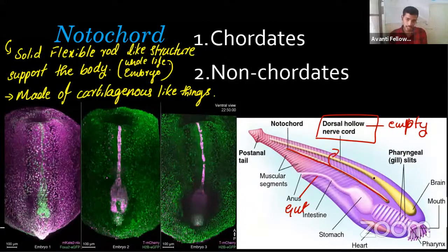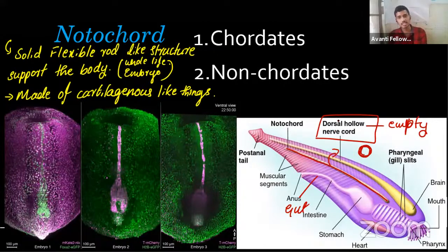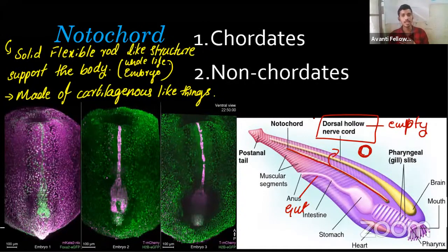The nerve cord is like a pipe — a narrow, hollow, fiber-like structure situated on the dorsal side above the notochord. That is why it is called the dorsal hollow nerve cord. The use of the notochord is to support the body. Dorsal means above, ventral means below — from back to front.